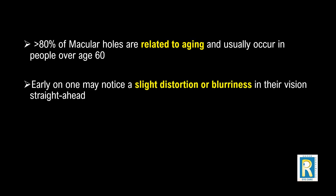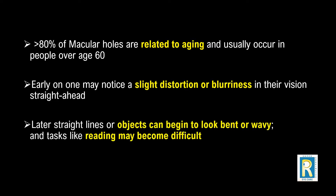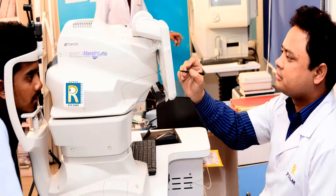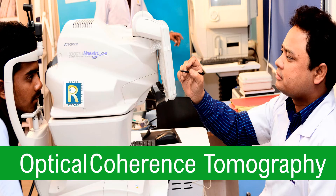Early on, one may notice a slight distortion or blurriness in their vision due to macular holes. But if left untreated, patients may lose vision — objects can start to look bent or wavy, and reading, writing, and identifying colors may become very difficult.